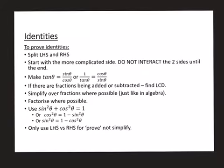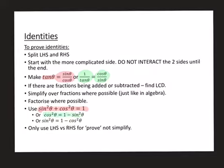All right, grade 11s, here is your next slide. We are working now with something called an identity. We briefly spoke about identities at the beginning when we spoke about tan being sine over cos, or sine squared plus cos squared equals one. There are variations — if you invert tan, you can also flip the fraction for sine and cos, and you can rearrange the squares identity like we did in the previous videos.